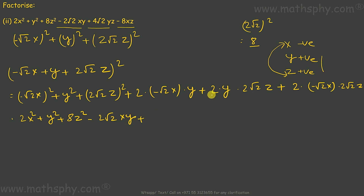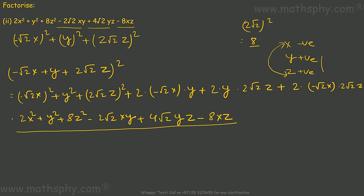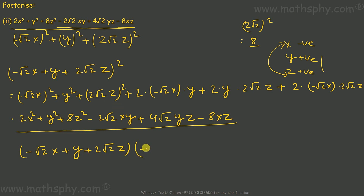So we came back to exactly the original expression: 2x² + y² + 8z² - 2√2·xy + 4√2·yz - 8xz. This means the expression can be written as (-√2·x + y + 2√2·z)², and we can write it again as (-√2·x + y + 2√2·z)². Make sure x and z are not under the root — they are outside the root.